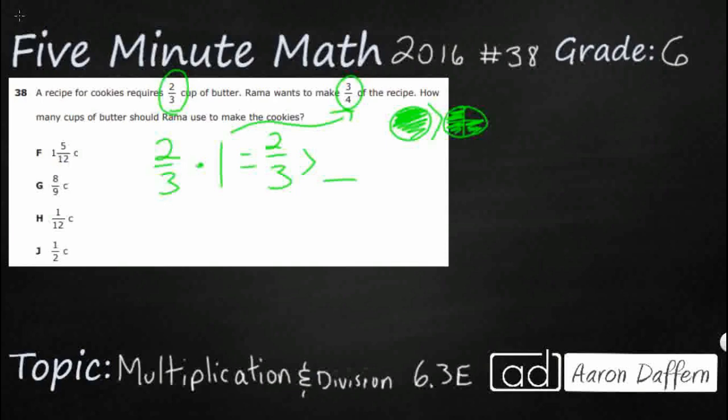Because when you multiply any number by a fraction that is less than one, and three-quarters here is less than one, your product actually gets smaller. That's the crazy thing to think about.